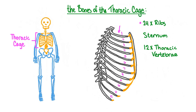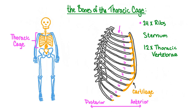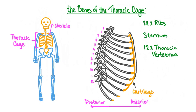The ribs are 12 pairs of curved, flat bones. They stretch from the spine in the posterior of the torso to the sternum in the anterior part of the chest. The ribs are connected to the sternum by a special type of cartilage called costal cartilage. The bottom two pairs of ribs are shorter than the others and are referred to as floating ribs because they do not connect to the sternum at all. The sternum, also commonly called the breastbone, attaches to 20 of your 24 ribs and also serves as a point of attachment for the arms through the two clavicles, or collarbones. The thoracic vertebrae are the 12 bones of the spine that connect to the ribs.